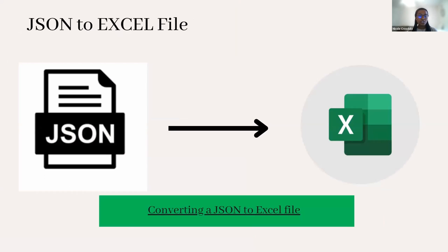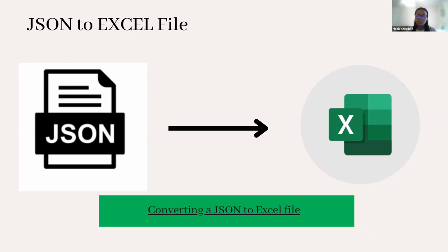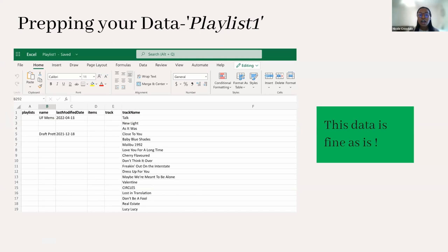This slide has a link to a converter from a JSON file to an Excel file, since that's more accessible for most people. You'll have access to this presentation to refer to when you get your Spotify data. We're going to be looking at the streaming history file first. These are the steps to clean up our data before putting it into our coding language. We're also using a second dataset — the playlist file — which I'll show you how to edit in Python Jupyter Notebooks.